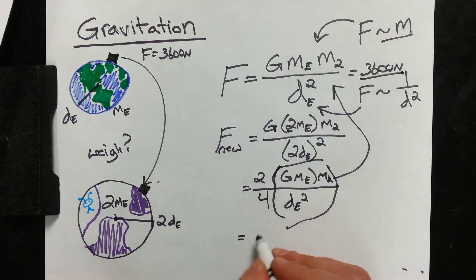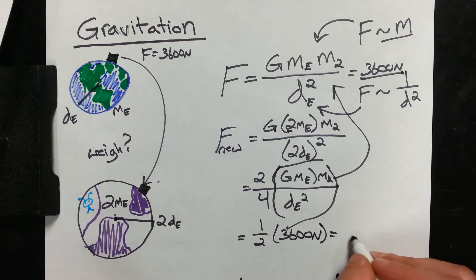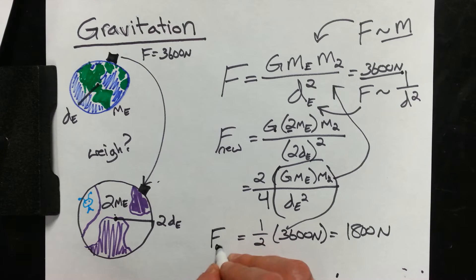So really I have two-fourths, and that's one-half times 3,600 newtons. And that's going to give me 1,800 newtons. So without knowing the mass of the satellite or the actual mass of the planet, I just know how they're related, I can figure out that new weight.